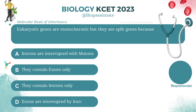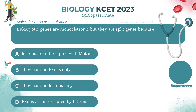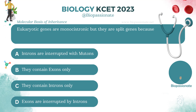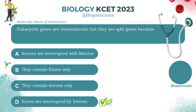Eukaryotic genes are monocystronic but they are split genes because of what reason? Answer: Exons are interrupted by introns.